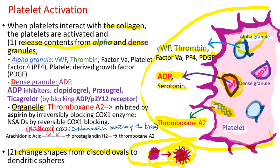If we have drugs that block ADP or thromboxane A2, they can be used to treat blood clotting conditions. Clopidogrel, prasugrel, and ticagrelor are drugs that inhibit platelet function by blocking the ADP-P2Y12 receptor of the platelet. They are often used to prevent clogging of coronary artery stents.